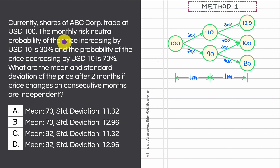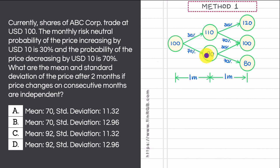In this question, there is a company ABC Corp whose shares are currently trading at a price of $100. Over any one-month period, the share price can go up by $10 USD with a probability of 30%, or come down by $10 USD with a probability of 70%. Changes in the share price over successive months are independent of each other.